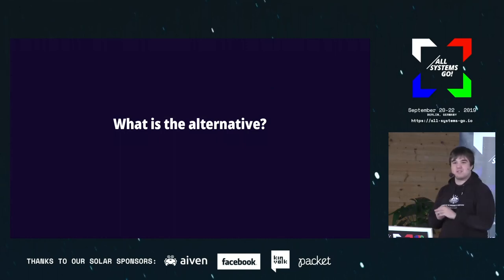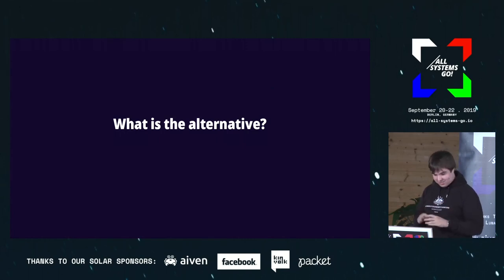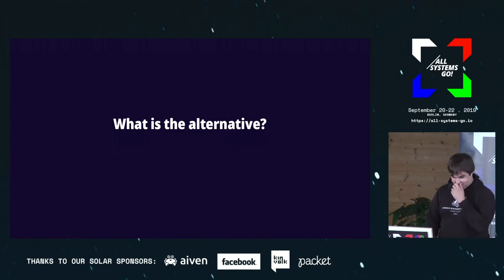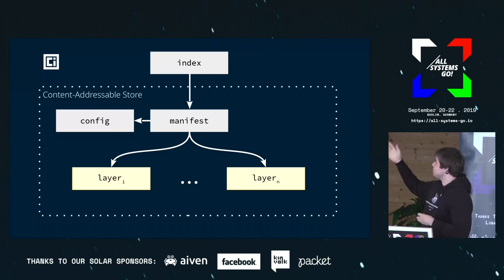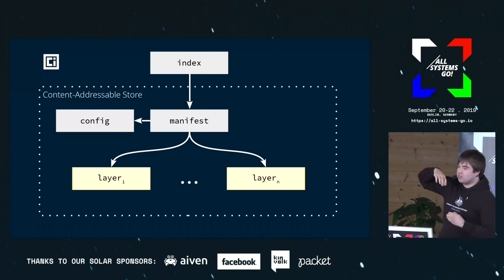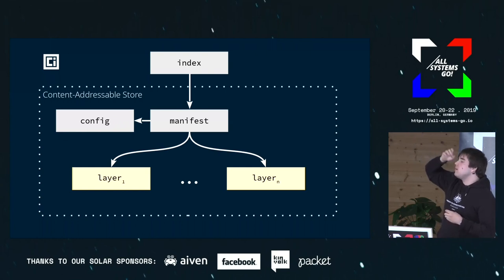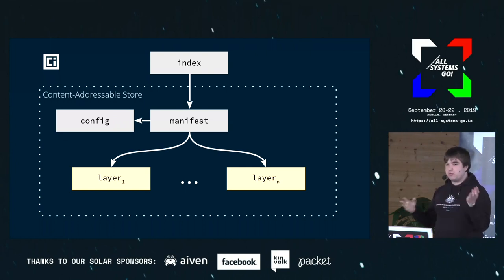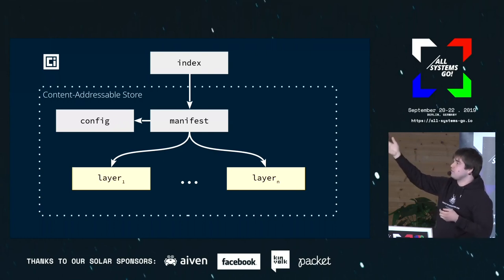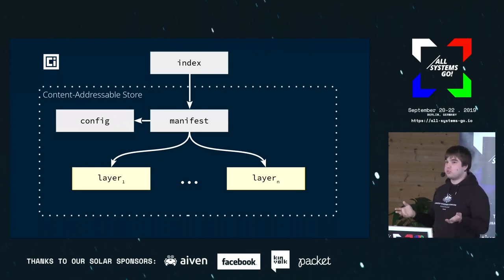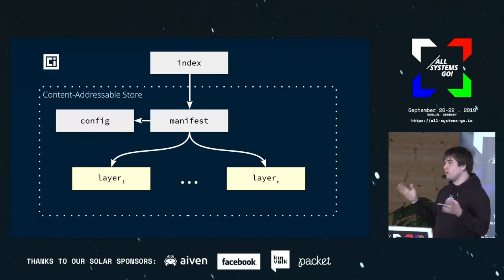So what's the alternative? The existing structure has an index, config, and layers — all content-addressable by hash — which gives you deduplication per blob. But you don't get it anywhere else. The idea is to instead expose all inode structures — all files and directories — directly to OCI, where each file gets chunked into individual blobs. So if you change one byte in a 10-gig file, you don't have another 10-gig blob needlessly inside your image store.